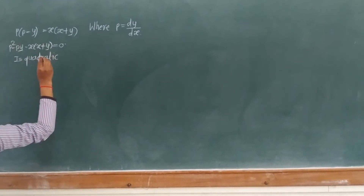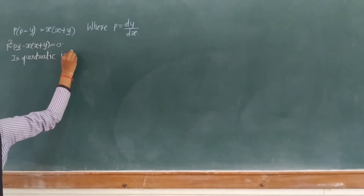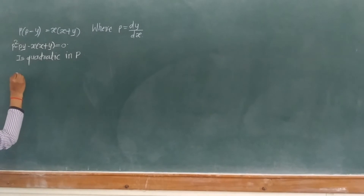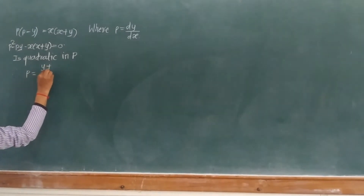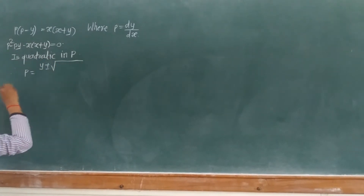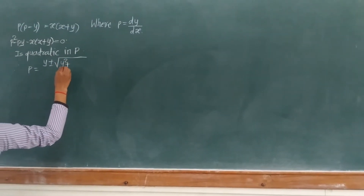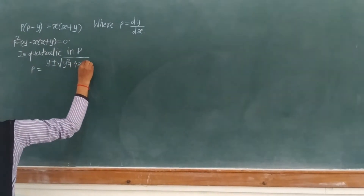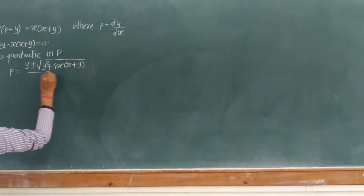Solving this equation for p using the quadratic formula, we get p equals (y plus or minus the square root of y squared plus 4x(x plus y)) divided by 2. On further simplification, 2p equals y plus or minus the square root of y squared plus 4x squared plus 4xy.